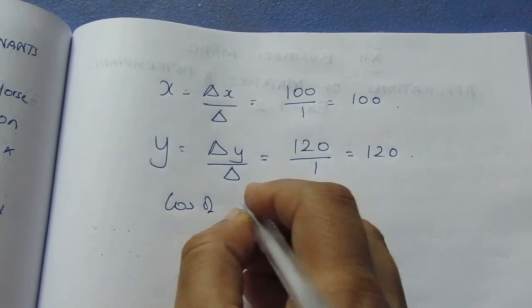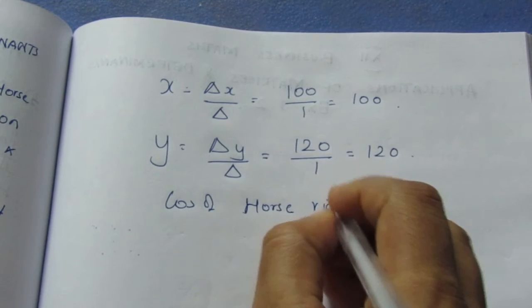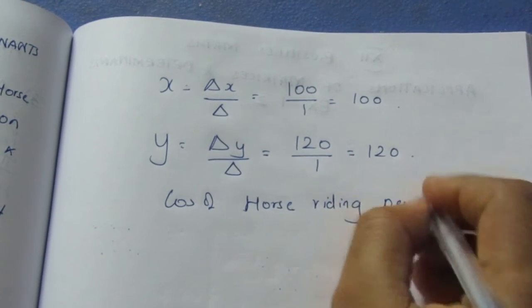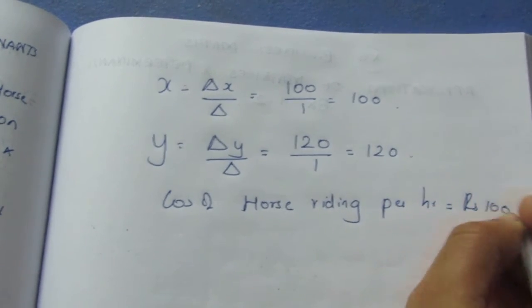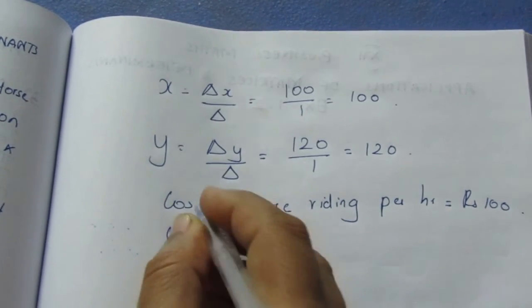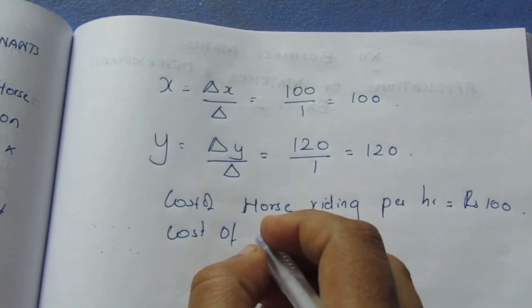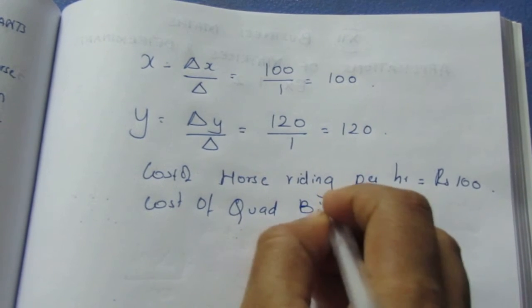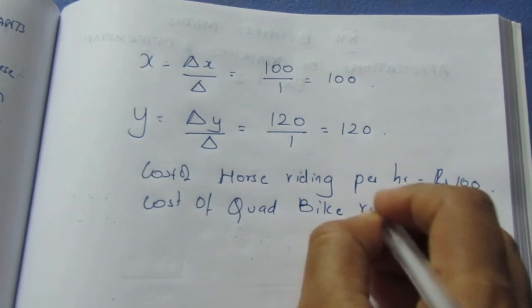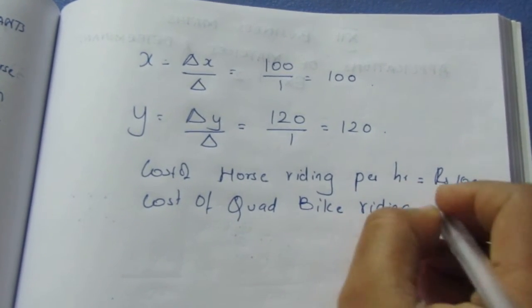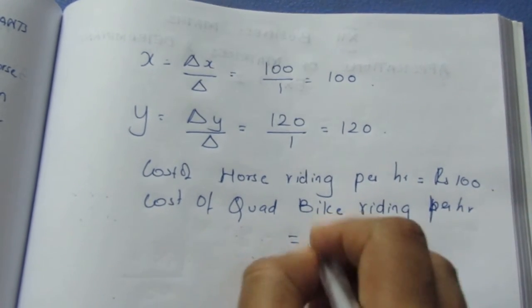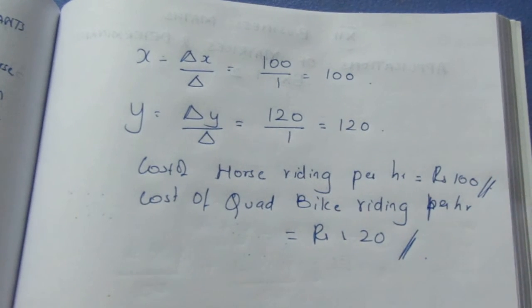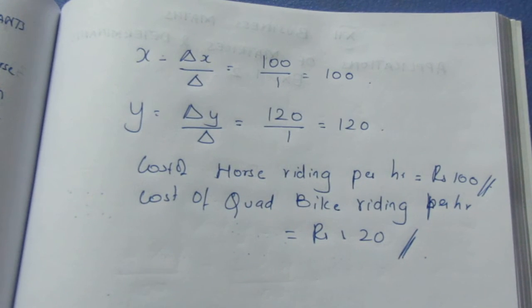Using the formula, x equals delta x over delta equals 100 over 1 equals 100. y equals delta y over delta equals 120 over 1 equals 120. Cost of Horse Riding per hour equals Rs.100. Cost of Quad Bike Riding per hour equals Rs.120. So this is the answer and this is the sum. Thank you.